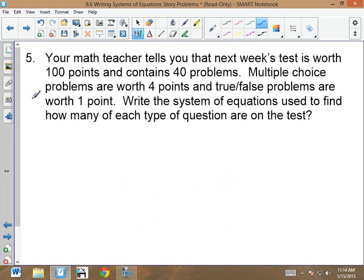Now, let's look at number five. Number five gets a little more complicated. You have to get your totals. Pick out your totals. So your math teacher tells you the next week's test is worth 100 points and contains 40 problems. Multiple choice problems are worth four points, and true-false problems are worth one point. Write a system of equations used to find how many of each type of question are on the test. So what are my totals, kids? Give me my two totals. 100, correct. 100 is one of my totals. What else is a total? 40.